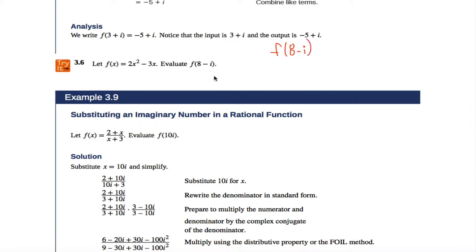all I would have to do is copy this blueprint right here, except everywhere I see the letter x, exchange it for 8 - i. So f(8 - i) is equal to 2(8 - i)² - 3(8 - i).